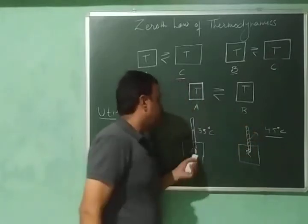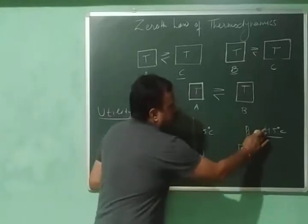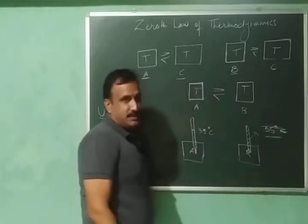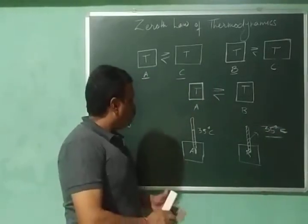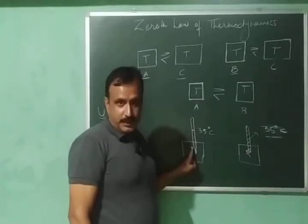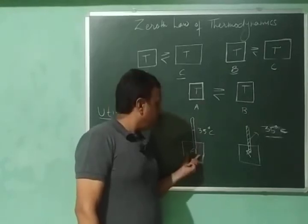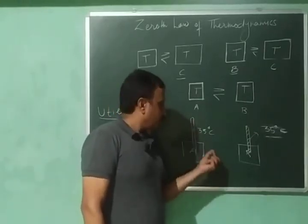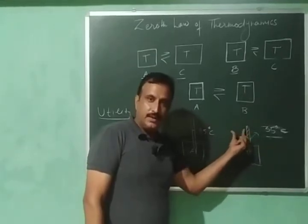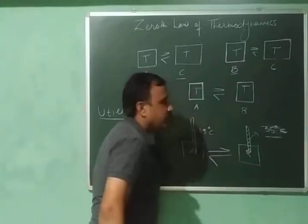And if the temperature of both bodies is the same — suppose the reading of the thermometer is the same in both cases, that is 35 degree Celsius — then both are having the same temperature. Here the thermometer is body C. A is in thermal equilibrium with the thermometer, B is also in thermal equilibrium with the thermometer, so they are also in thermal equilibrium with each other.